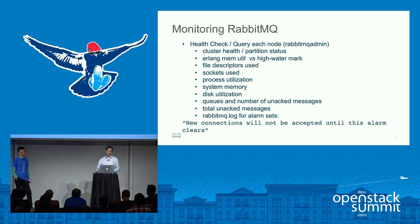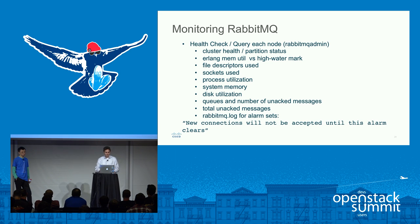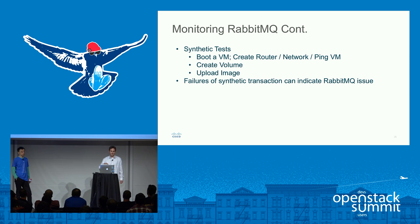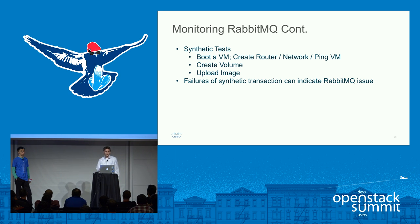You also want to make sure you look through the RabbitMQ logs, because you'll always see an alarm set go off, basically saying no connections are going to get accepted until this alarm clears, and right before that it'll tell you why — maybe you're out of file descriptors or out of memory. In addition to using RabbitMQ admin for monitoring, we also run a lot of synthetic testing. We have synthetic testing constantly sitting there basically booting a VM, creating a router, network, attaching to the VM, and pinging the VM. If it works, tear everything down and do it again. Create a volume, delete a volume, upload an image. A lot of times if you see a failure in this synthetic testing, it's hinting that something could be wrong underneath with Rabbit.